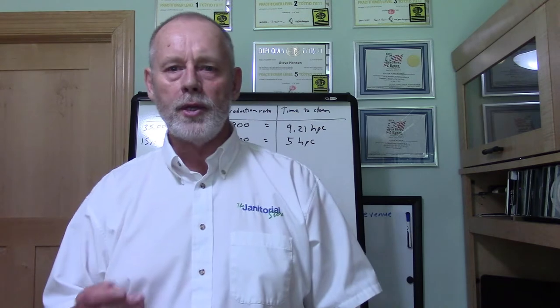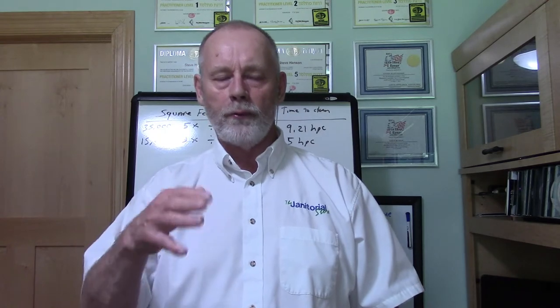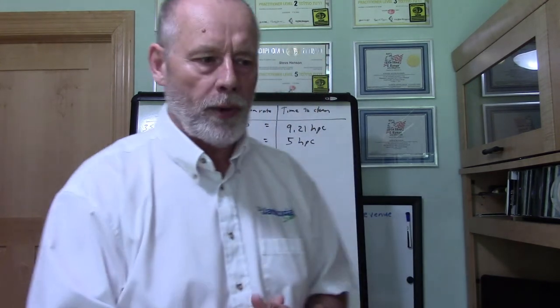Production rate is simply how many square feet you can clean per hour, and knowing it really helps with pricing. If you're trying to price an account and you know your production rates, you can use them to arrive at a time to clean. From that time to clean, you calculate how many hours per month you'll be cleaning the facility, then multiply by your billable rate to arrive at a price point.